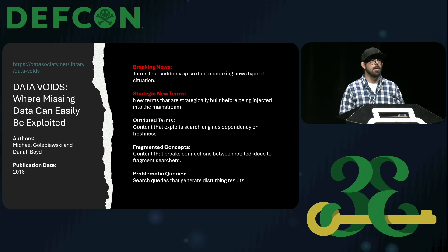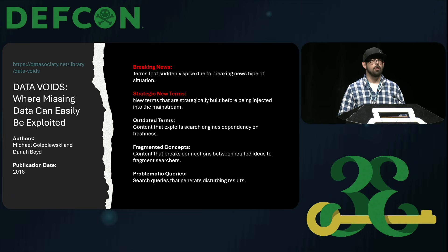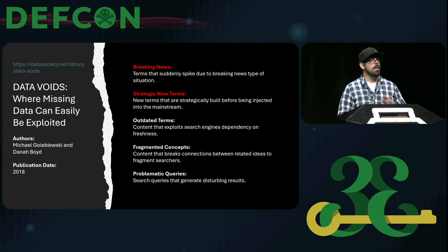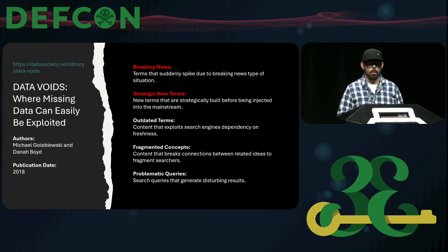Think of a data void as a search engine vacuum — it's a term that a user looks for, but there's just no relevant content to show yet, or nothing updated. Even further, in this paper they show how threat actors have already abused this in the past to spread misinformation about some of the biggest gun violence events in the US. They also show five different categories of data voids that can be abused. If you haven't read this paper, please go do that today — it's really amazing work.